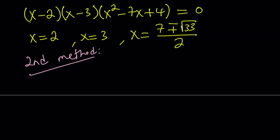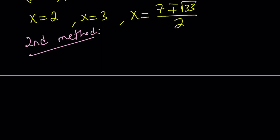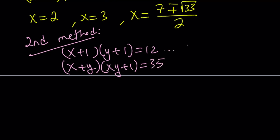So my second method involves a different approach. Let's go ahead and distribute the first equation. Remember, our first equation was x plus 1 times y plus 1 equals 12. And the second equation was x plus y multiplied by xy plus 1 equals 35. So I basically numbered these equations 1 and 2. I'm going to go ahead and distribute number 1.